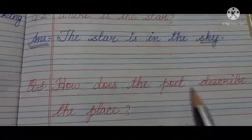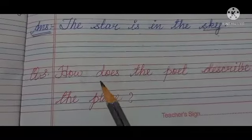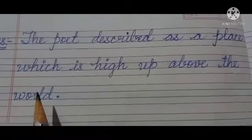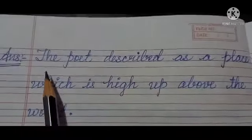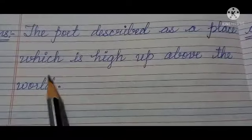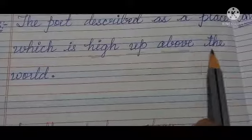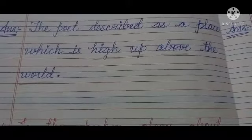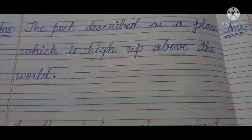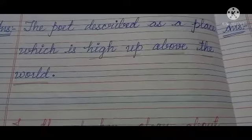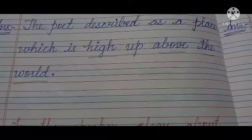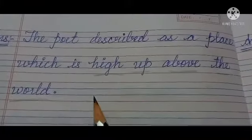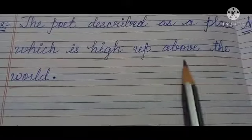Next: how does the poet describe the place? The place means where the star is. The poet described it as a place which is high up above the world — it is far away from us. The stars are far away from us, high above the world.